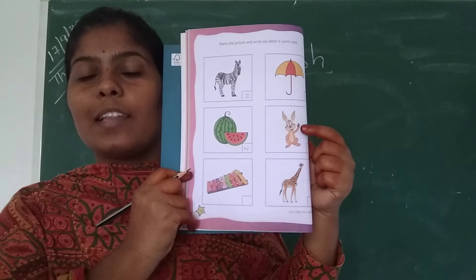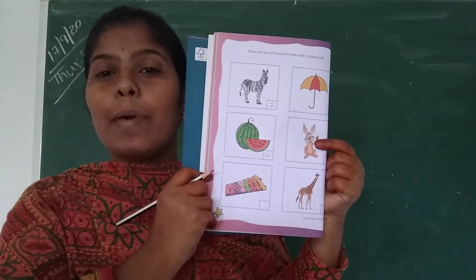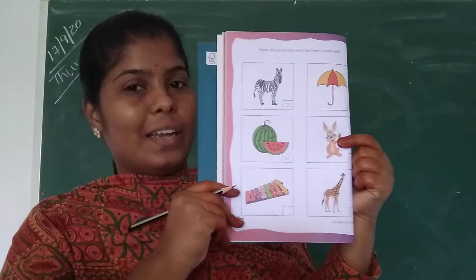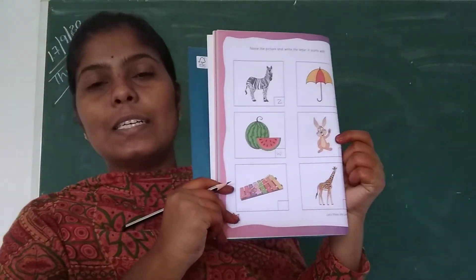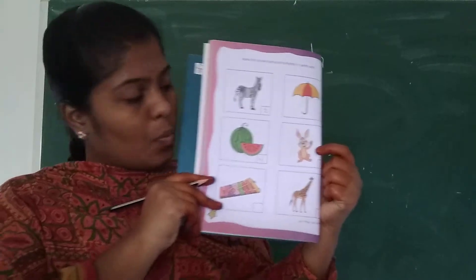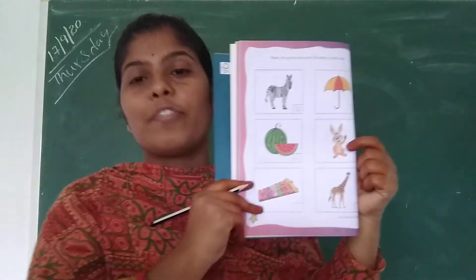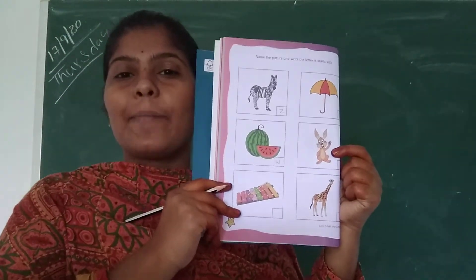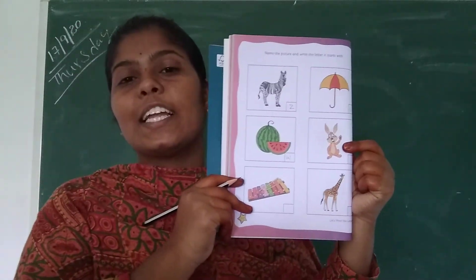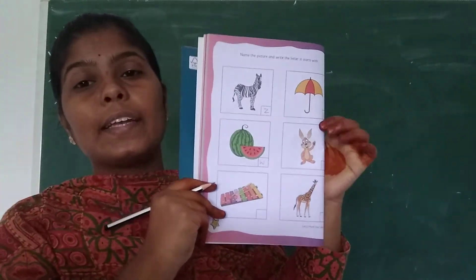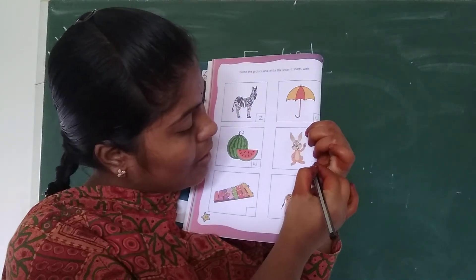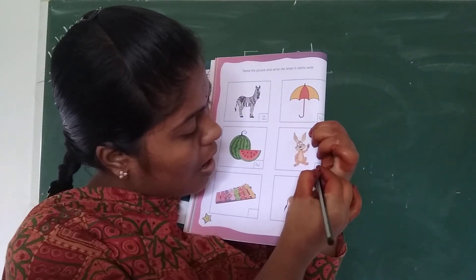What is this picture, children? Rabbit. Every child likes rabbit. What is the starting letter of rabbit? R-A-B-B-I-T. What is the starting letter of rabbit? R. Write R here.